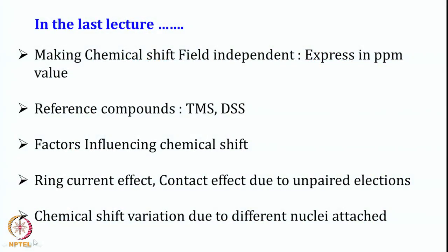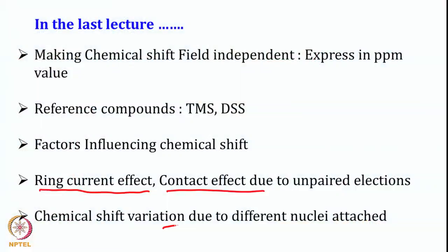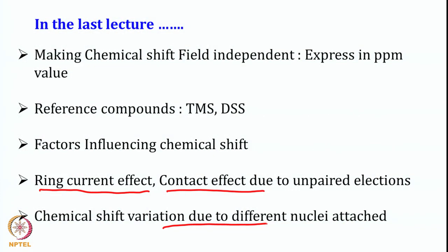Next we looked at what factors influence chemical shift, and among those many factors we looked at what ring current can do. The ring current effect causes a downfield shift or higher PPM value shift of the resonance of CH protons of aromatic compounds. Then we also looked at the contact effect, which comes because some unpaired electrons are present and can shift chemical shift significantly. After that we looked at chemical shift variation due to different nuclei attached, and all of that was summarized in the last class.